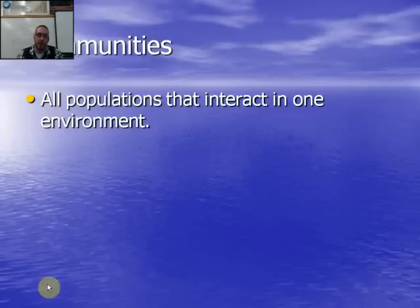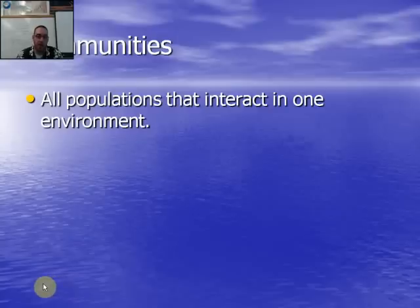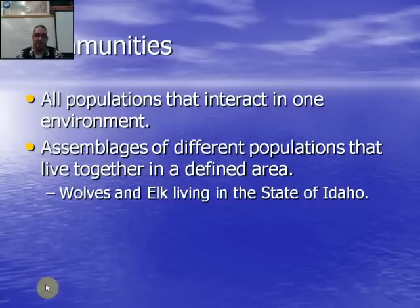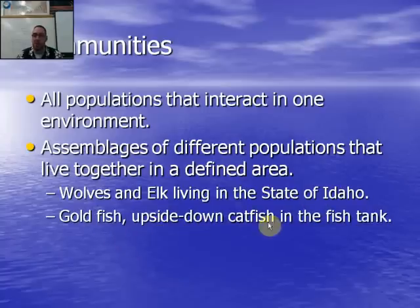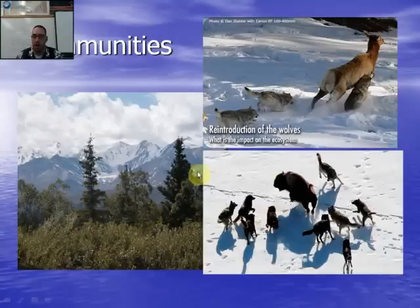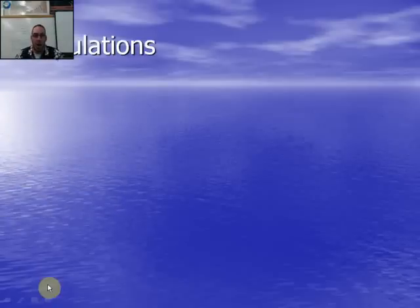A community focuses on the interactions between populations — all the biotic life forms in a defined area, going back to all seven kingdoms: archaea, bacteria, plants, animals, fungi, and protists. A community is an assemblage of different populations living together — just the living components. For example, the wolf and elk population within the defined area of the state of Idaho, or goldfish and upside-down catfish in my fish tank. Don't forget plants — producers are the most important parts of communities.